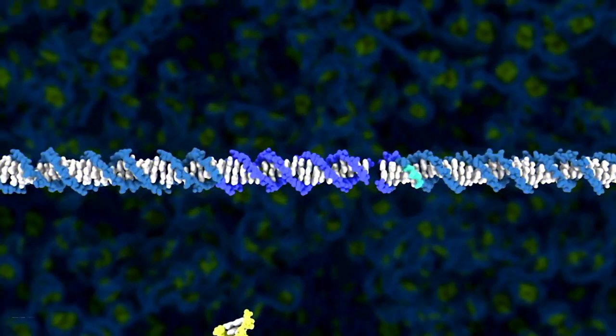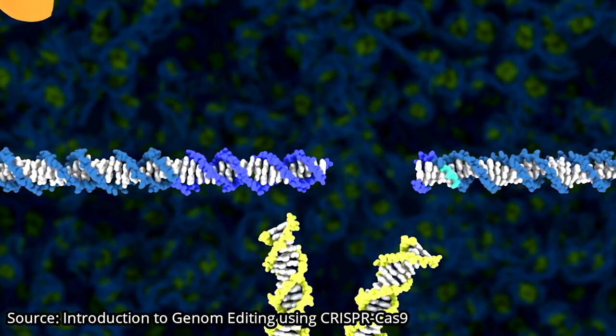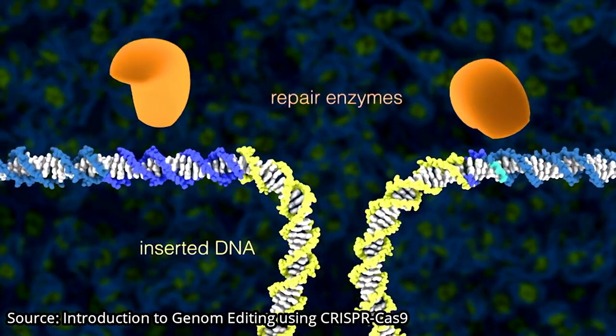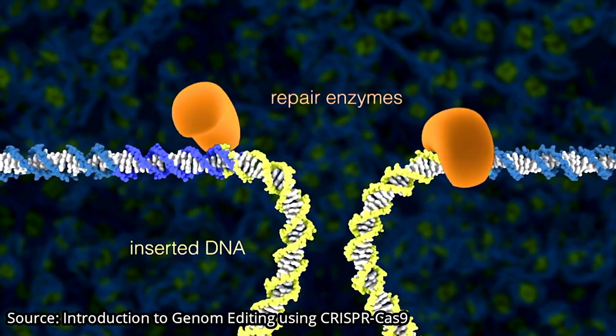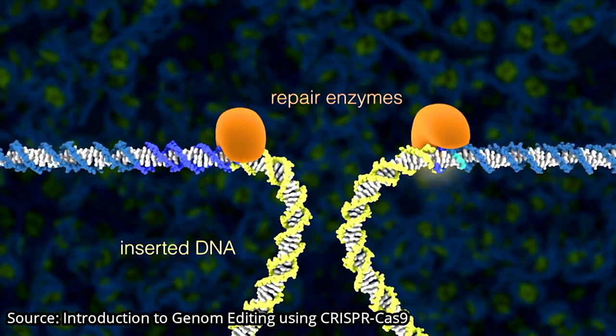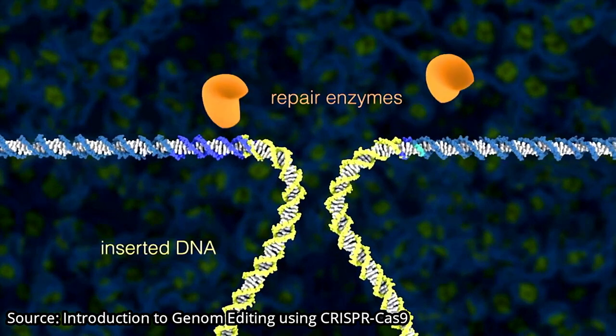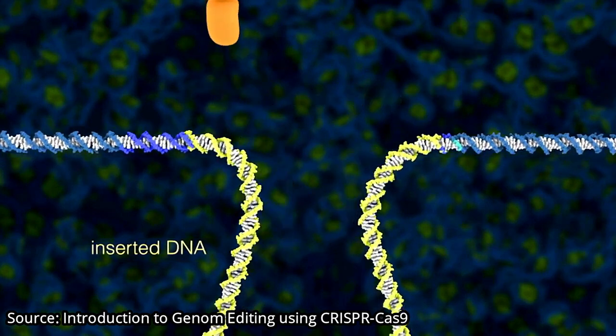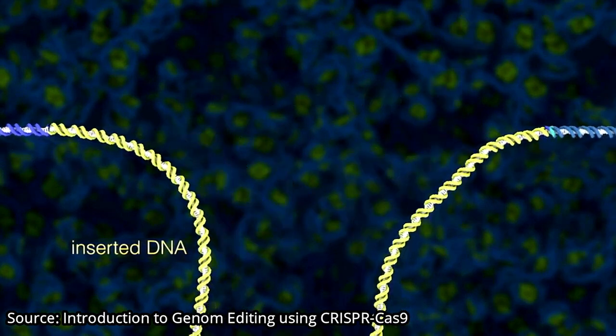This precise gene editing means you could turn a mutated gene into a new healthier version — like, for example, to edit the genes that cause hereditary diseases. And for the example of inserting a new genetic code, it's done through the same process, but a new DNA strand is added by the experimenter to give a new trait to the organism.